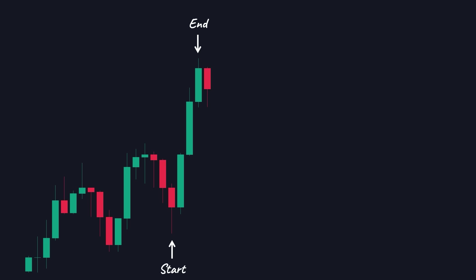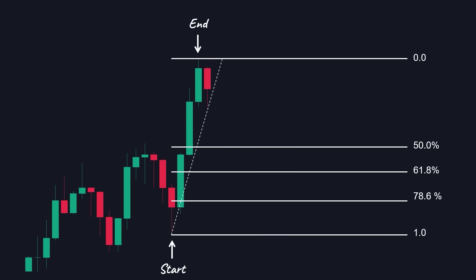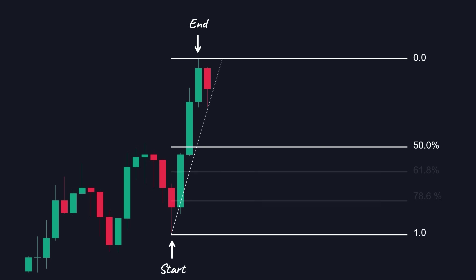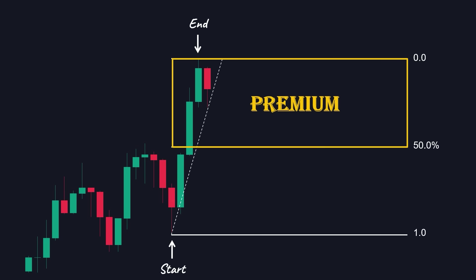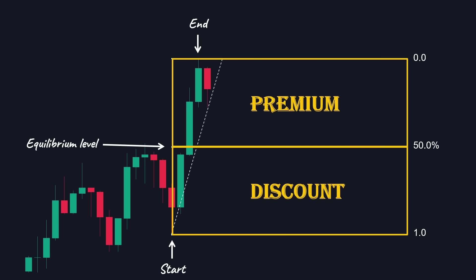This is where Fibonacci retracement levels come into play. We always apply this tool from the start of the impulsive wave to the end, because it helps us identify the correction range. If you apply this tool, you'll notice that a bunch of levels appear on the side. All of these important levels will act as support and reject the price when it reaches them. As it goes lower, it shows a deeper retracement. But for now, we only need the 50% retracement level. The area above the 50% retracement level is called the premium side of the range, and the area below is called the discount zone. The 50% level itself is called the equilibrium level.